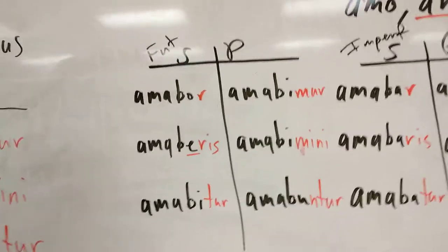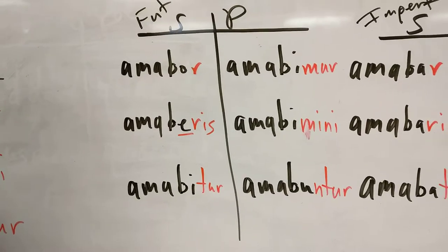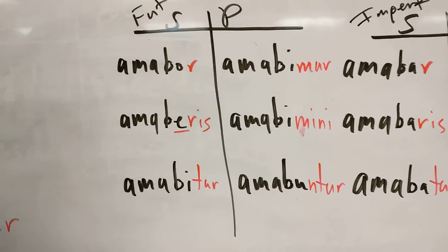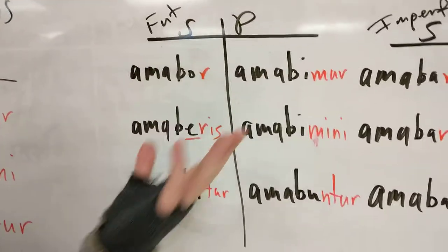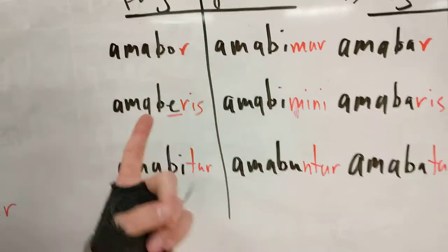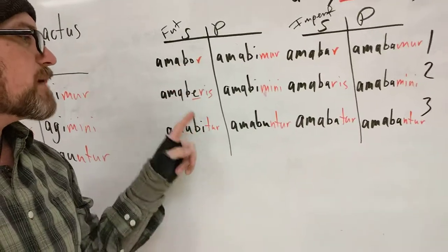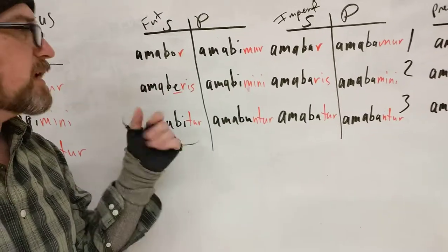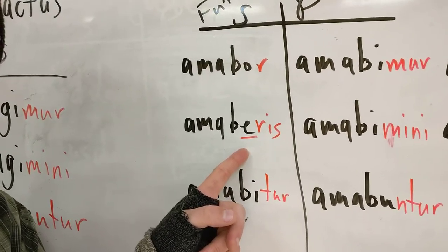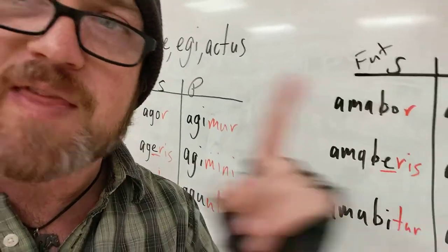Same deal for the future. For the first and second conjugation, the future is present stem plus -bi-. So where I had amabo, amabis, amabit — I now have amabor, amaberis, amabitur. But there is one exception: in the second person, we switch out the -i- for an -e-, giving amaberis. All the rest are literally the same as active but with the passive ending — that one is different.